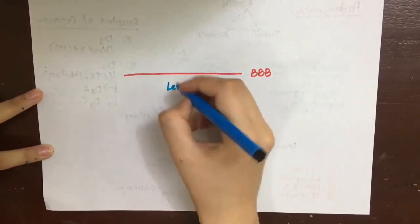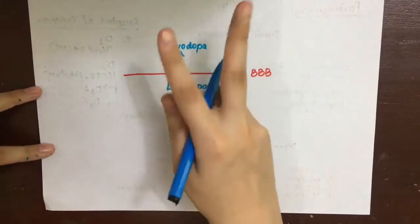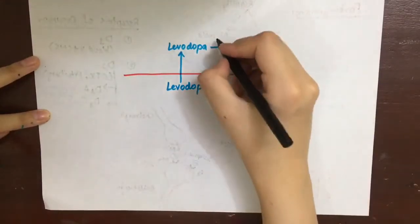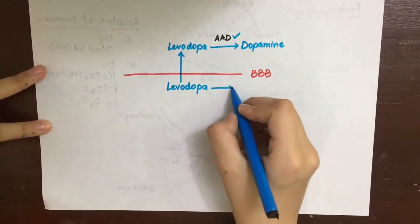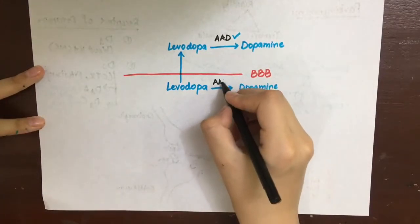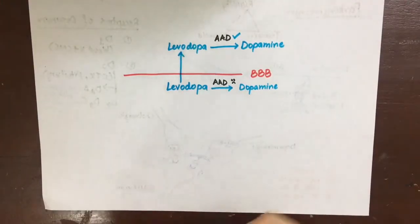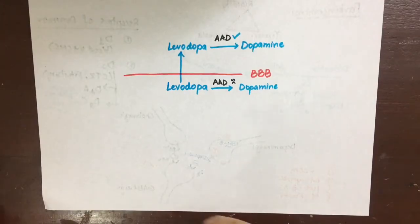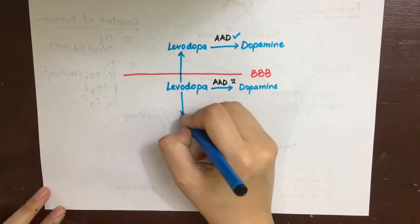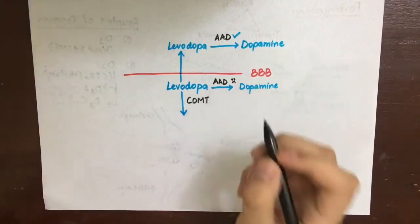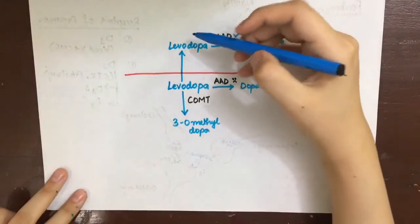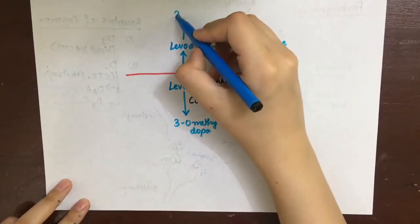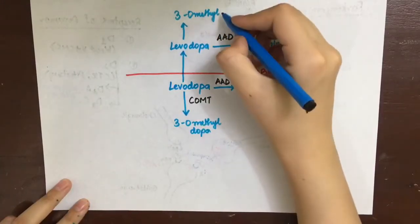The prodrug levodopa can cross the blood-brain barrier, while dopamine cannot. Levodopa is converted by aromatic amino acid decarboxylase (AAAD) into dopamine in the CNS. However, AAAD is also present in the periphery, where it converts levodopa into dopamine peripherally — wasting the drug and causing side effects including vomiting via the chemoreceptor trigger zone and cardiovascular effects. Additionally, catechol-O-methyltransferase (COMT) — present in both the periphery and CNS — converts levodopa into 3-O-methyl dopa, decreasing levodopa availability.